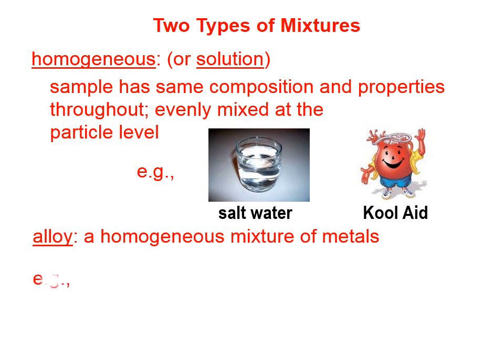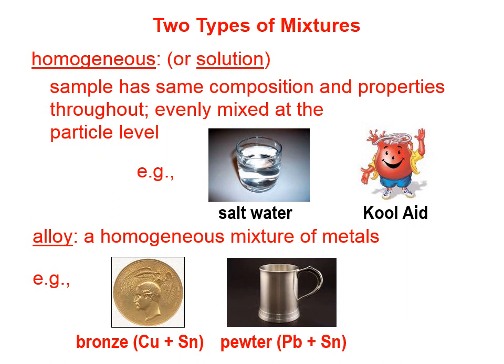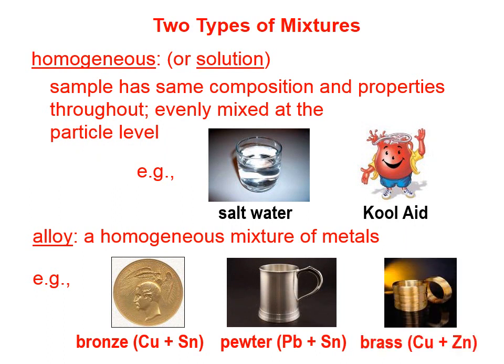While we normally think of solutions as liquid, there are also homogeneous mixtures of metals called alloys. Bronze is a homogeneous mixture of copper and tin. Pewter is a homogeneous mixture of lead and tin. Brass is a homogeneous mixture of copper and zinc. Not all bronzes are exactly the same — one sample might be 50% copper and 50% tin, another 90% copper and 10% tin — but within a given sample, those copper and tin atoms are evenly mixed. That's what we mean by a homogeneous mixture.